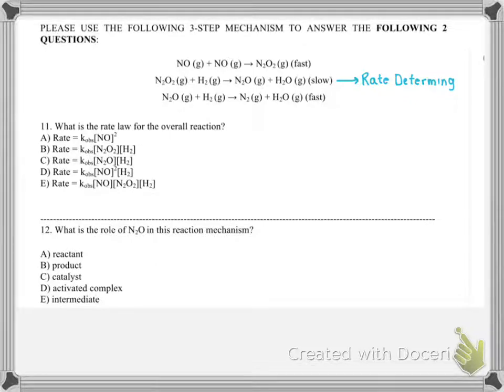Here for number 11 we have a reaction mechanism question. So we have this three-step reaction and they tell us that the second step is the slow step. So each of the steps they give us are elementary reactions, which means they just happen in one go.